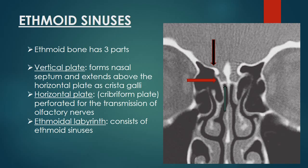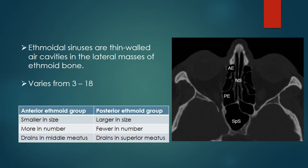The fovea ethmoidalis is very prone to iatrogenic injury or trauma and can lead to CSF rhinorrhea. The ethmoid sinuses are thin-walled air cavities in the lateral mass of the ethmoid bone, varying in number from 3 to 18. They are divided into two groups: anterior and posterior. The anterior ethmoid sinuses are usually smaller in size, more in number, and drain into the middle meatus, while posterior ethmoid sinuses are larger in size, fewer in number, and drain into the superior meatus.